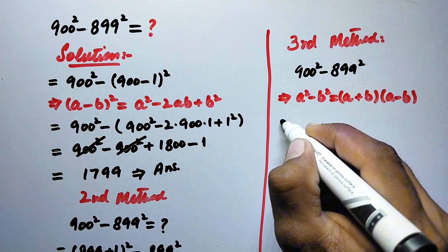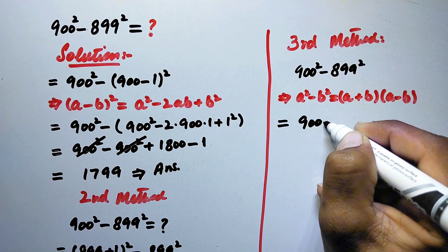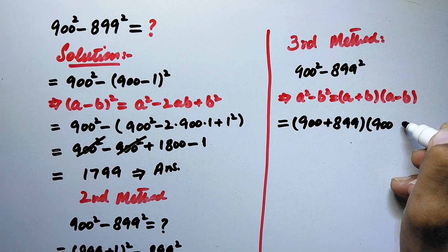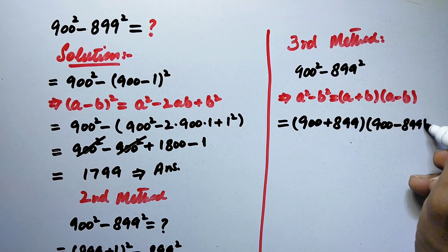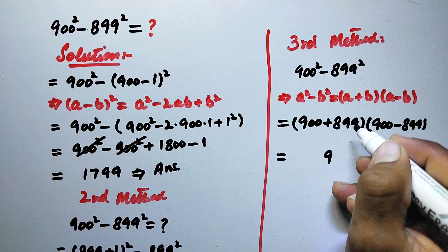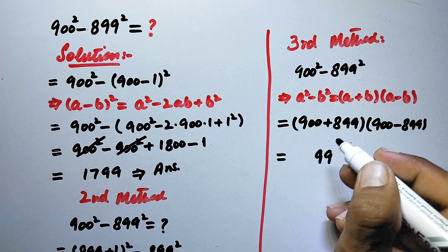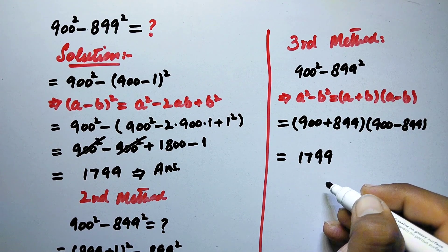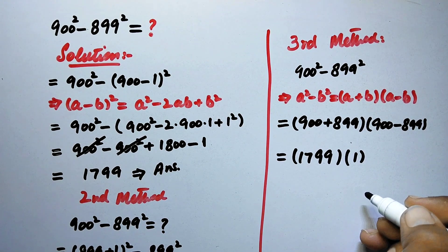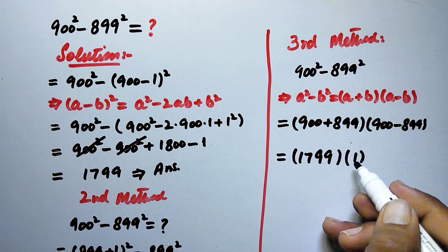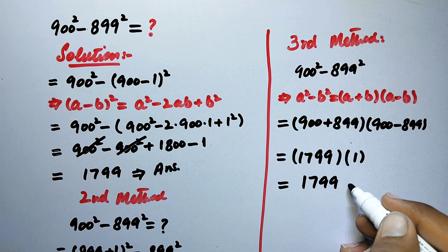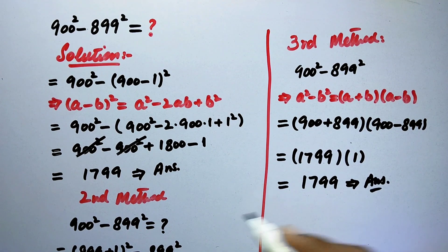Therefore here we will write (900 + 899) × (900 - 899). So here 9 + 0 = 9, 9 + 0 = 9, and 8 + 9 = 17. Times 900 - 899 = 1. So here 1799 × 1 = 1799. That is again the same answer.